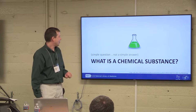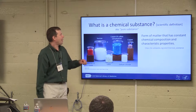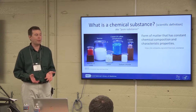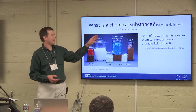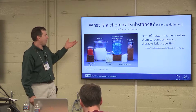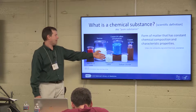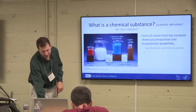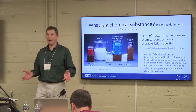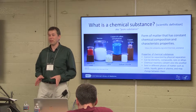I want to talk about what a chemical substance is. It's a very simple question, and it's not really a simple answer. If you go to Wikipedia, it'll give you the usual textbook answer: a form of matter that has constant composition and characteristic properties. You think of it as water, mercury oxide, sucrose, an element like sulfur or copper. The general thing is you can't separate it out any further — that's the classic scientific definition.